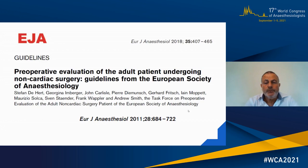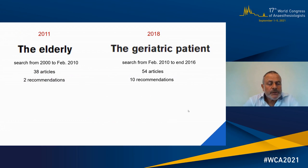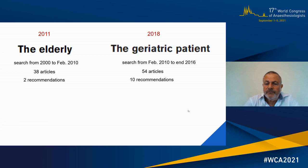In 2011, we did a search from 2000 to February 2010, looking specifically at issues and articles on preoperative evaluation of the elderly. 38 articles were retrieved, finally leading to two recommendations. For the 2018 version of the guidelines, the search went from February 2010 to 2016. We found 54 suitable articles, leading finally to 10 recommendations.